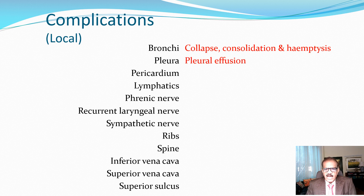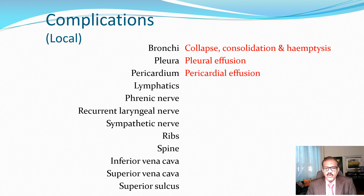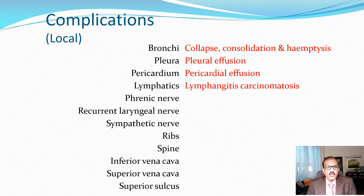If the pericardium is involved, there could be pericardial effusion; the patient may present with cardiomegaly, pericardial tamponade, dyspnea, or other features. If there is lymphatic involvement, it may give rise to a typical X-ray appearance called lymphangitis carcinomatosa — infiltration of lymphatics with lung cancer cells. If it involves the phrenic nerve, it may cause diaphragm paralysis and respiratory difficulties; diaphragm paralysis can be diagnosed on clinical examination, fluoroscopy, and chest X-ray.